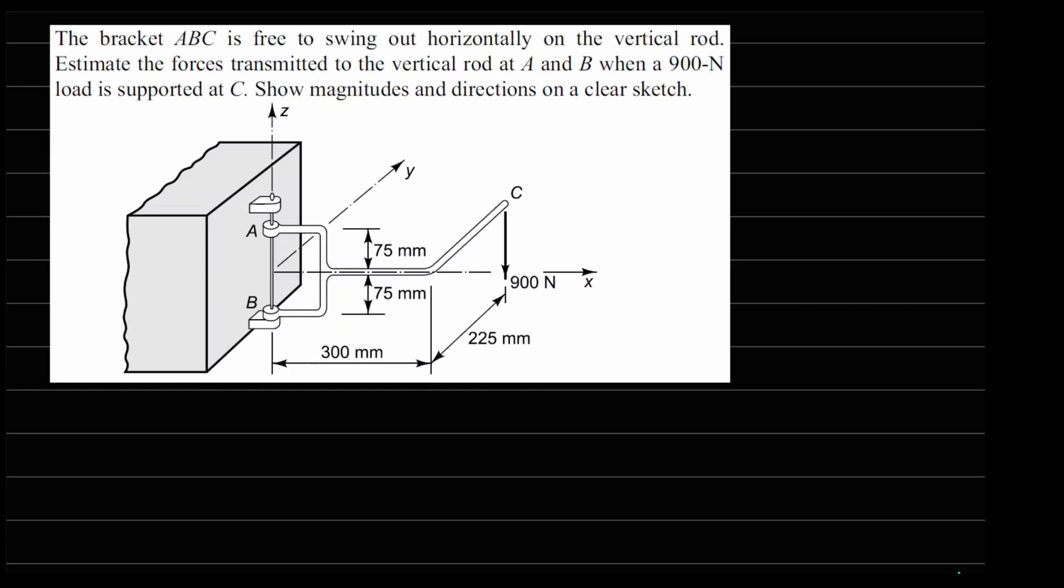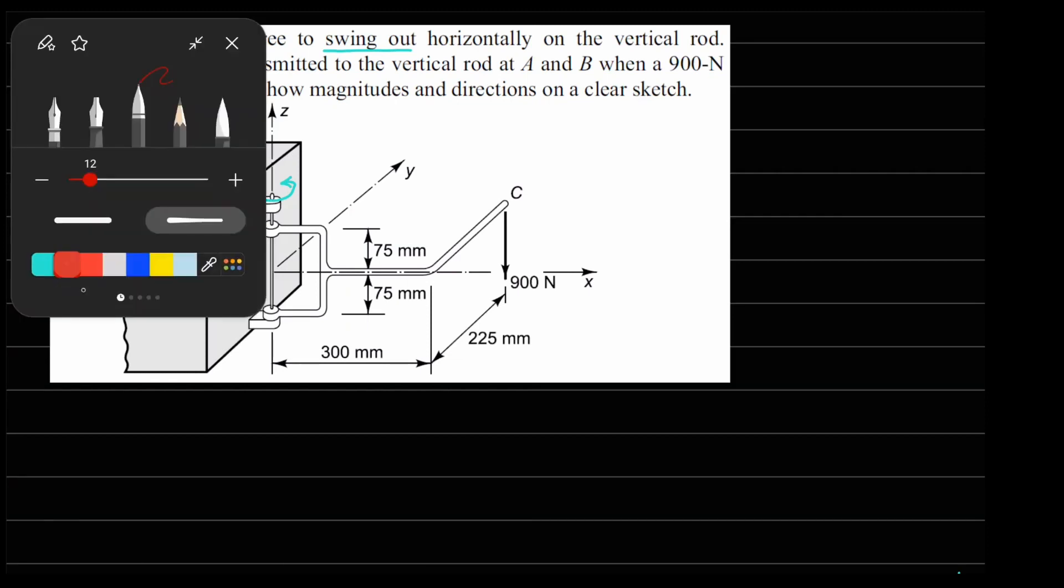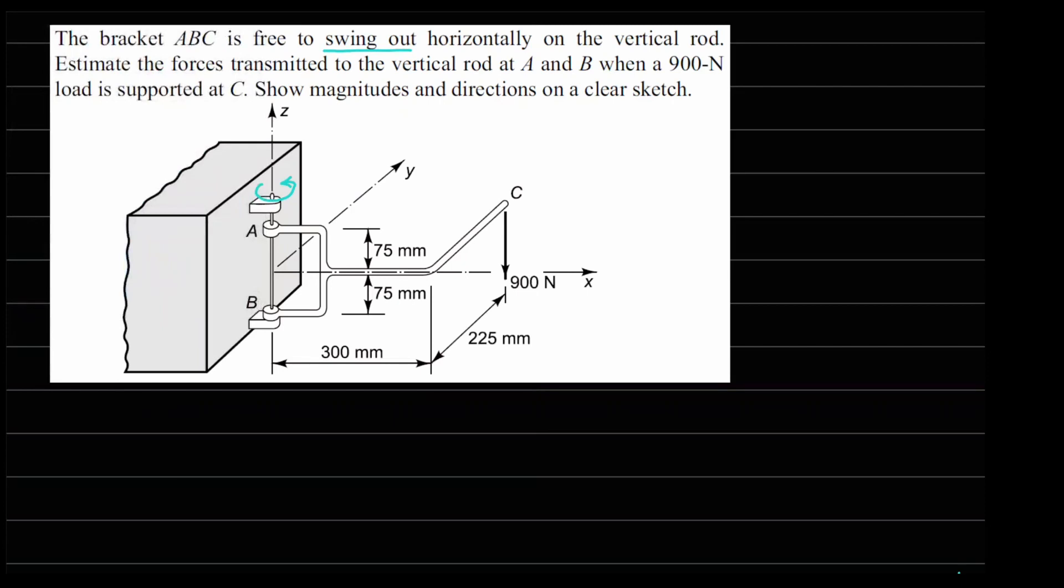So what is important here is to understand what will happen at point A and point B. Since it is free to swing, there will not be any moment coming at point A and point B. The reactions that will come at point A and point B will be forces.